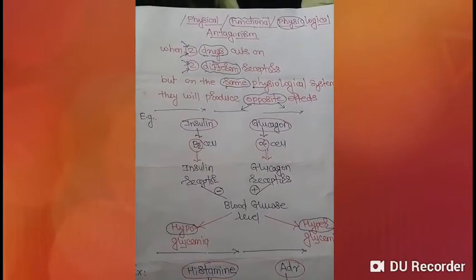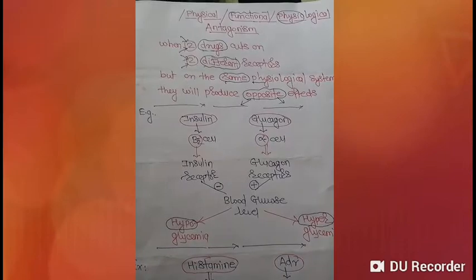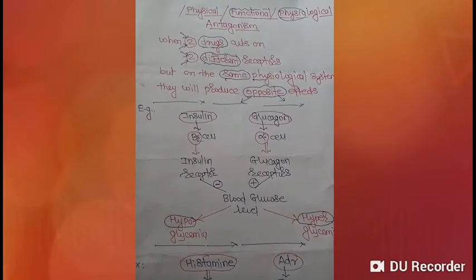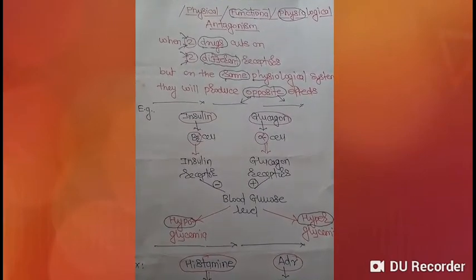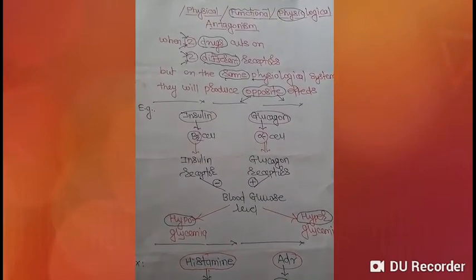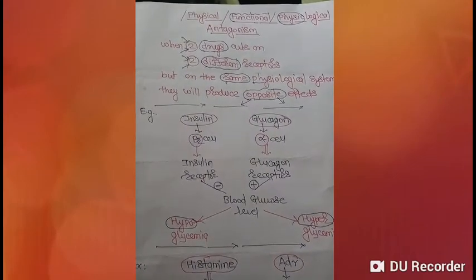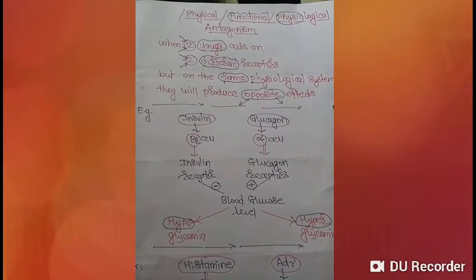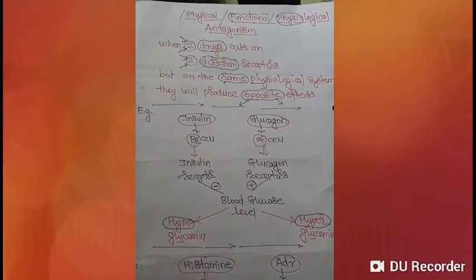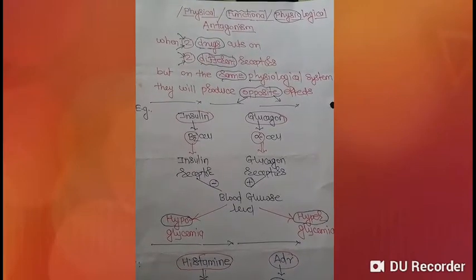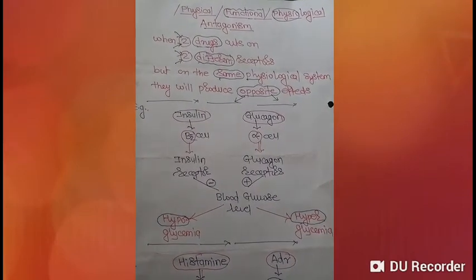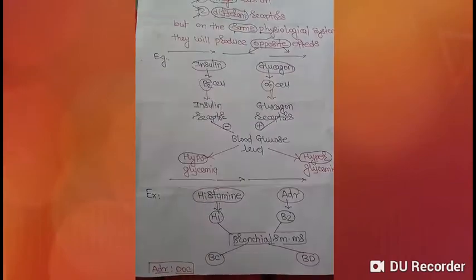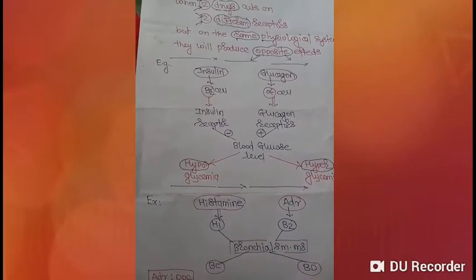Insulin will reduce or decrease the blood glucose level, that means it causes hypoglycemia. Glucagon acts on the glucagon receptors and causes an increase in the blood glucose level, producing hyperglycemia. So two drugs acting on two different receptors on the same physiological system produce opposite effects. Another example is histamine and adrenaline.